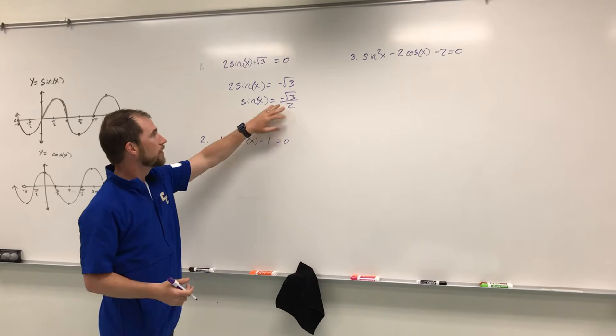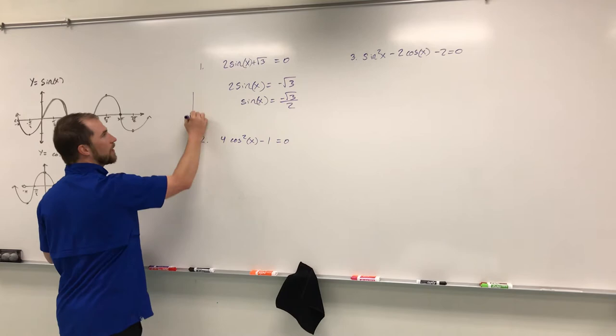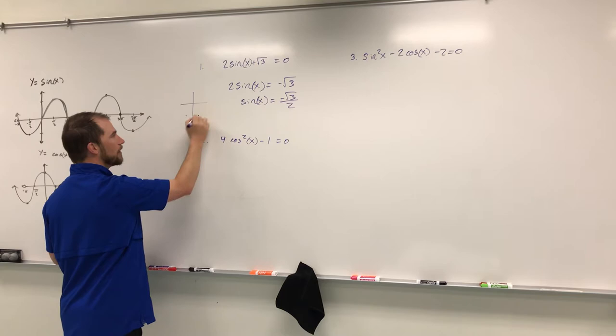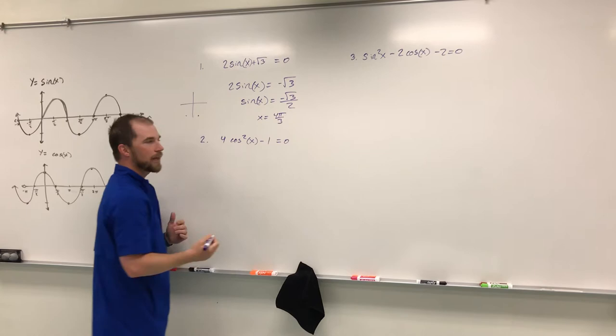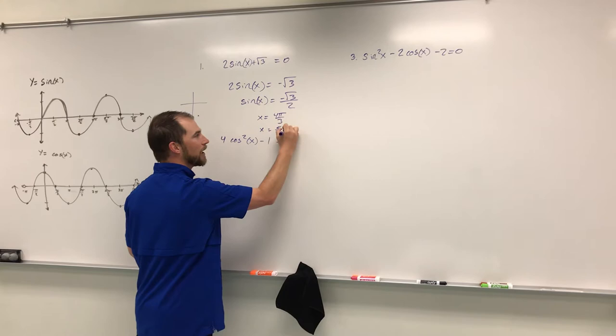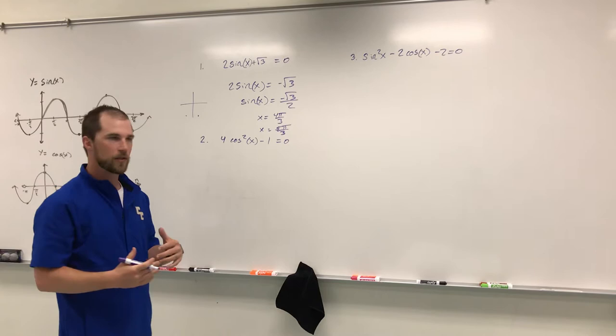That value is on our unit circle, so we need to figure out where. Sine is negative in the third and fourth quadrants, so it's going to be right here and right here — those are our over-threes. We get x equals four pi over three, and x also equals five pi over three.